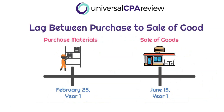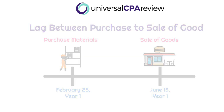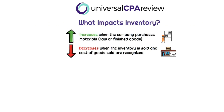That is the fundamental difference. From when a company purchases raw materials all the way until they actually sell that finished good to a customer — for some companies that could be a week, but for others it could be six months. If we recognized cost of goods sold when we purchased those materials, that wouldn't align with revenue. That is why under accrual basis, we only recognize cost of goods sold when that inventory is sold — that is the matching principle.